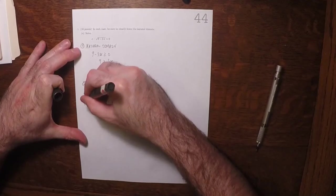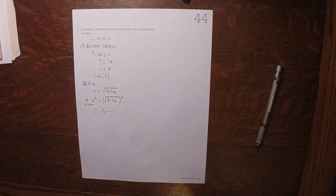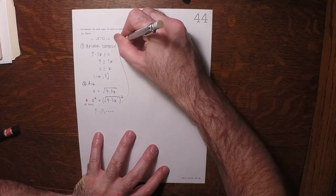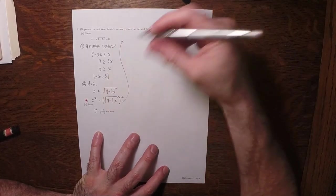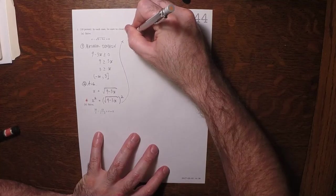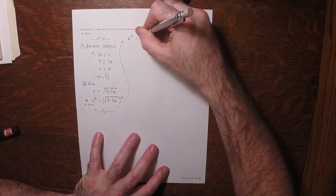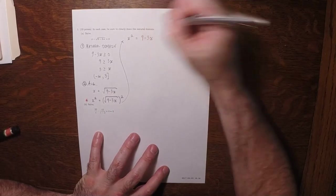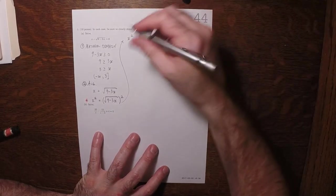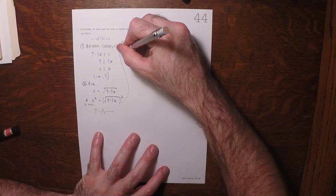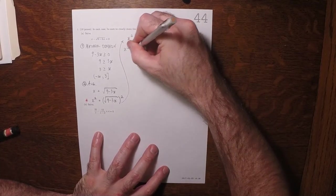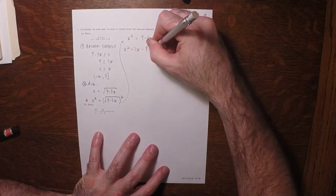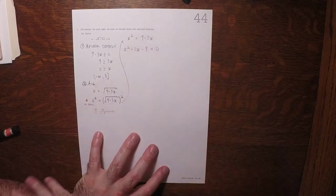But squaring both sides is not truth-preserving, which means that we're going to need to check all of our answers after having done that. Then x squared is 9 minus 3x. We'll move everything to the other side. x squared plus 3x minus 9 is equal to 0.